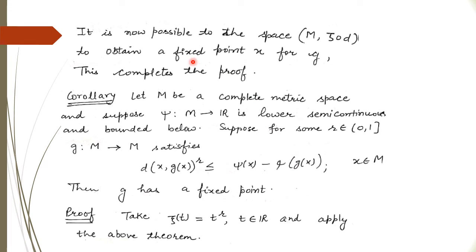Now we can apply the Caristi fixed point theorem and easily verify that g has a fixed point x, because this space is complete with respect to ξ∘d and satisfies all remaining hypotheses of the Caristi fixed point theorem. This completes the proof.